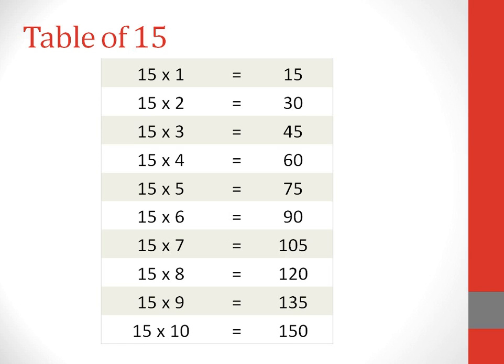Table of 15. 15 ones are 15. 15 twos are 30. 15 threes are 45. 15 fours are 60. 15 fives are 75.